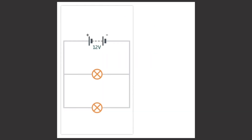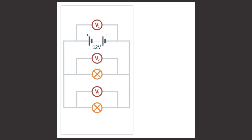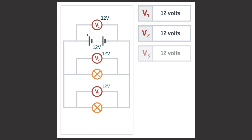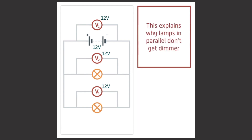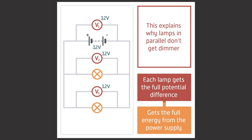Finally, let's look at potential difference across lamps in a parallel circuit. Let's set up a circuit containing a 12 volt power supply and two lamps in parallel. Now we add voltmeters V1, V2 and V3. V1 is placed in parallel across the power supply and V2 and V3 are placed in parallel across each lamp. Examples of potential difference readings you may get are V1 equals 12 volts, V2 equals 12 volts and V3 equals 12 volts. We find that in a parallel circuit the potential difference is the same across each parallel loop. This result explains why lamps placed in parallel do not get dimmer — each lamp gets the full potential difference and so gets the full energy from the power supply.